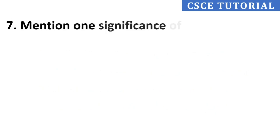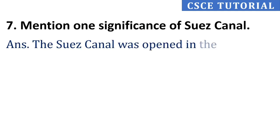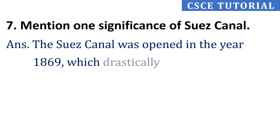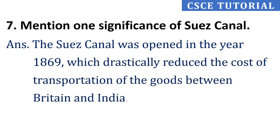Seventh question: Mention one significance of the Suez Canal. Its answer is, the Suez Canal was opened in the year 1869, which drastically reduced the cost of transportation of goods between Britain and India, because its route was shorter.